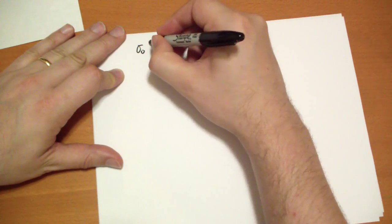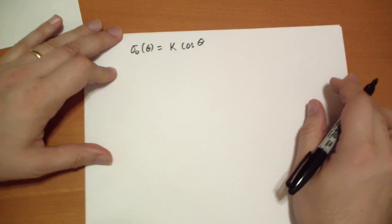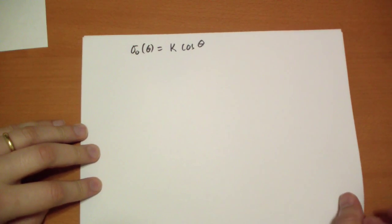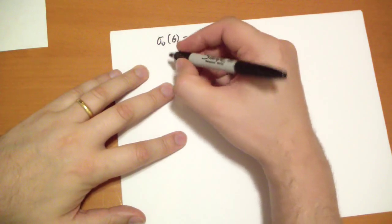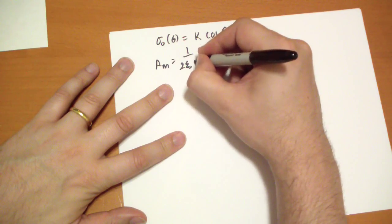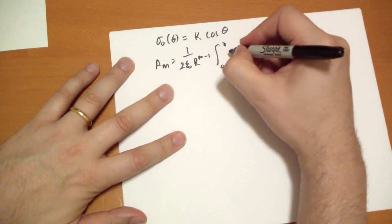So if our sigma-naught of theta is equal to some constant k times cos theta. What does that represent? Well cos theta gives you the z component in spherical coordinates. And so k cos theta is basically some point that's along the vertical axis. So if the surface charge depends on how far up or down you are on that sphere, we plug this in. So we have our a_m equals 1 over 2 epsilon-naught r to the m minus 1 integral from 0 to pi of our sigma-naught theta, which is k cos theta.